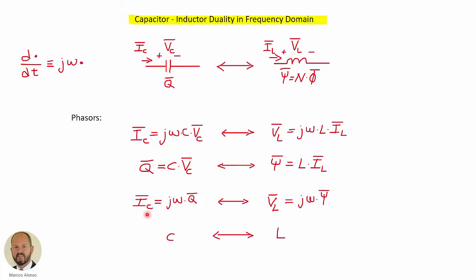The phasor of the current through the capacitor is jω times the phasor of the charge, and the phasor of the voltage across the inductor is jω times the flux linkage phasor. Of course, C is dual with L.